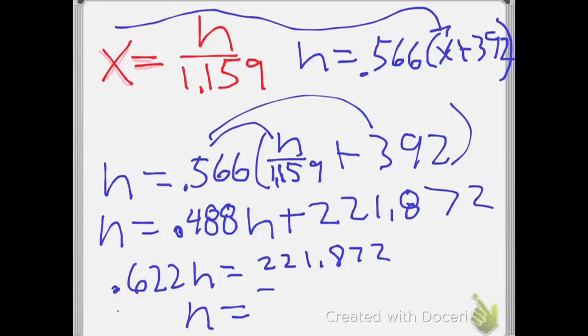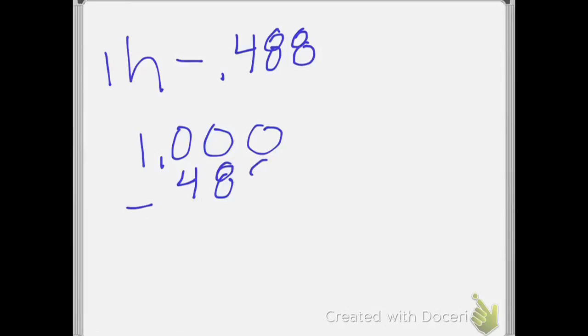So h is... what's 0.566 divided by 1.159? 0.488h plus... what's 0.566 times 392? So 0.622h is 221.872. I subtracted the 0.488 from both sides, and that's how I got the 0.622. And now divide both sides by 0.622. What's h turned out to be? 356.7. The 0.622? Yeah, that was 1h minus 0.488h.